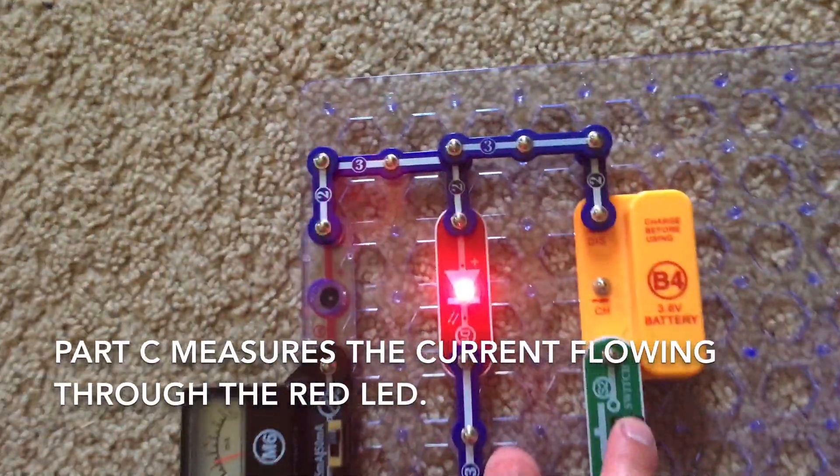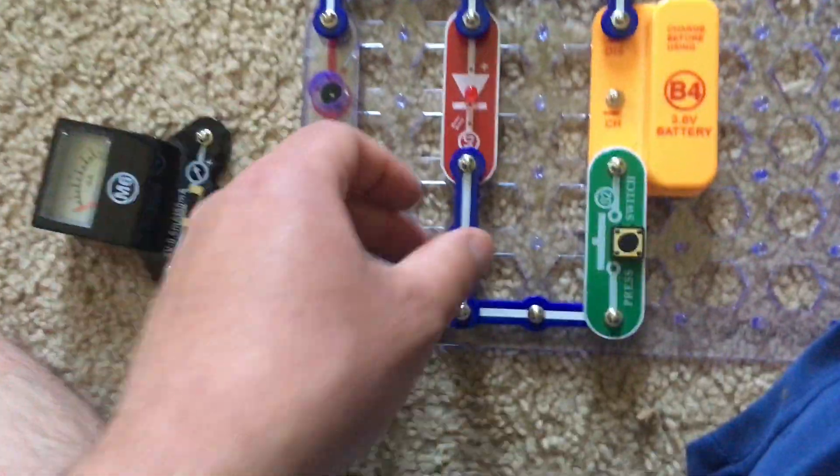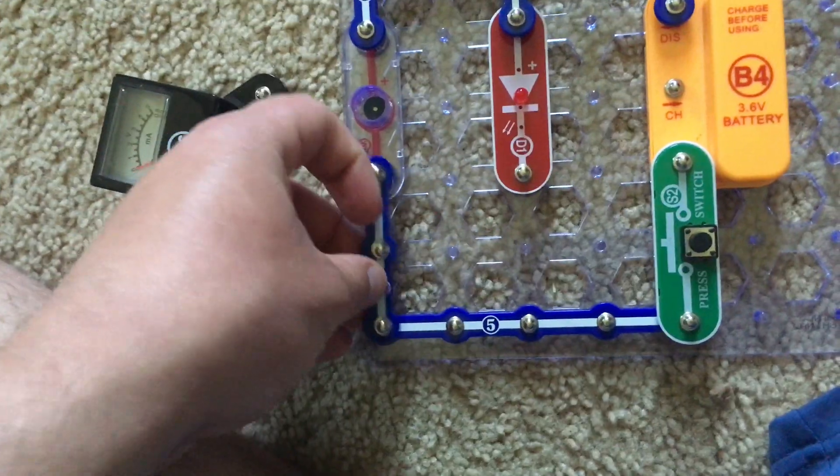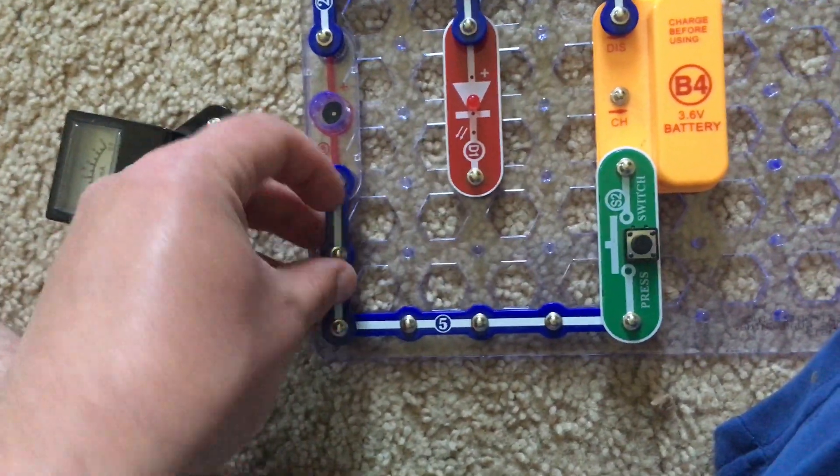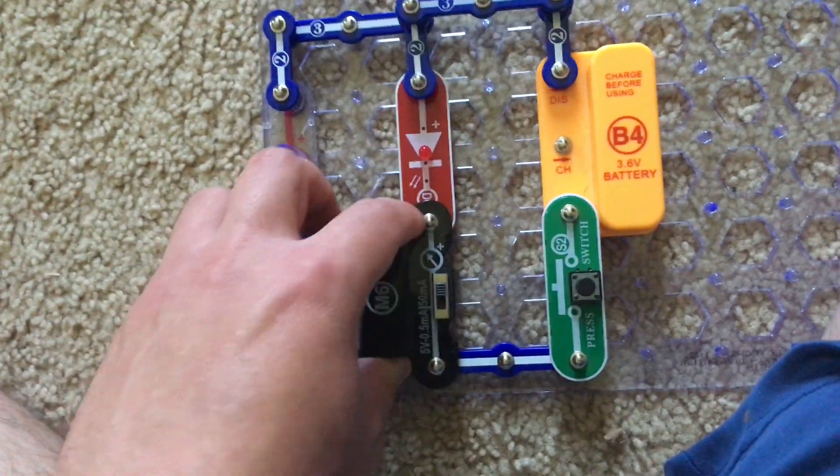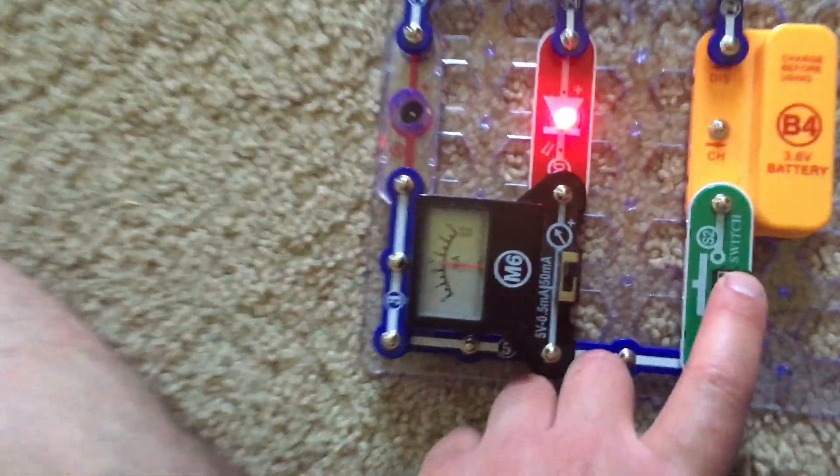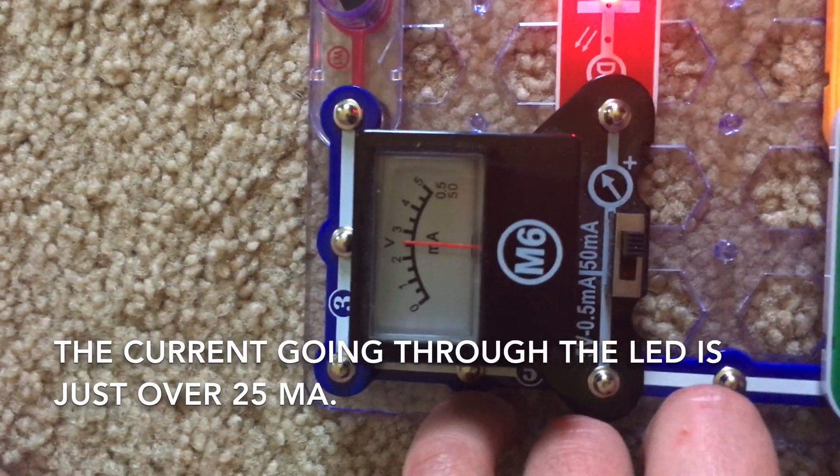For part C, we will move this three snap wire over by the horn so that the meter measures the current through the red LED. Now it reads just over 25 milliamps.